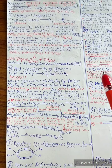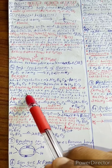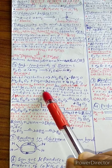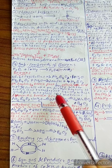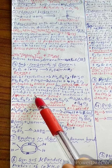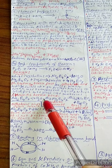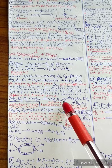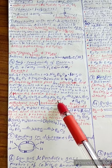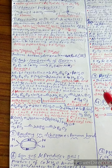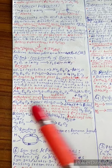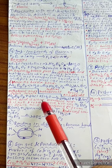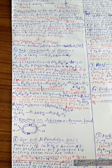On heating, borax first loses water molecules and swells up, then on further heating solidifies into a glass-like material known as the borax bead. The reaction: Na₂B₄O₇·10H₂O → Na₂B₄O₇ → 2NaBO₂ + B₂O₃ (boric anhydride). Orthoboric acid is prepared by: Na₂B₄O₇ + 2HCl + 5H₂O → 2NaCl + 4H₃BO₃.